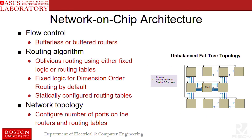The network-on-chip in BRISC-5 provides several other configurable parameters. For example, a user can use bufferless or buffered routing. For routing algorithms, since it supports table-based routing, you can always implement new routing algorithms by configuring the routing table entries. A user can also change the network topology by simply configuring the number of input/output ports and routing table entries.